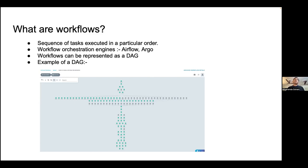Any questions so far on Kubernetes and workflows? A question was raised: is there any concept of things joining back? Yes — you can have multiple forks of tasks running in parallel. If you want to join back after a couple of them are done, the downstream node basically aggregates the results of all the previous tasks.